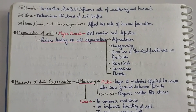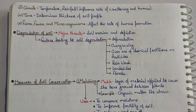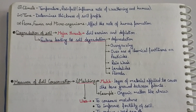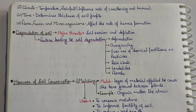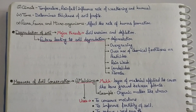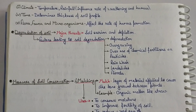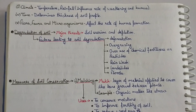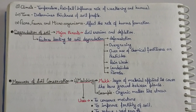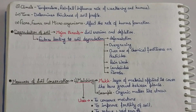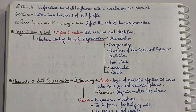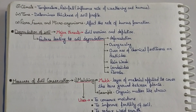Fourth, time — time is also a factor that helps determine the thickness of the soil. Fifth, flora, fauna, and microorganisms — flora, fauna, and microorganisms affect the rate of humus formation. The more plants, animals, and microorganisms are present, the more humus forms.